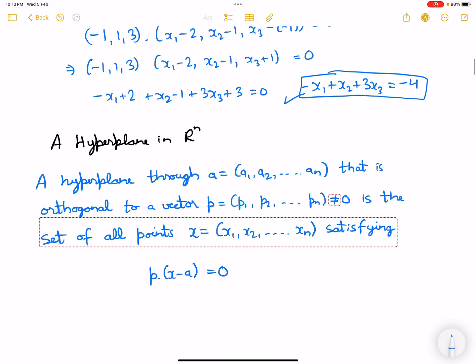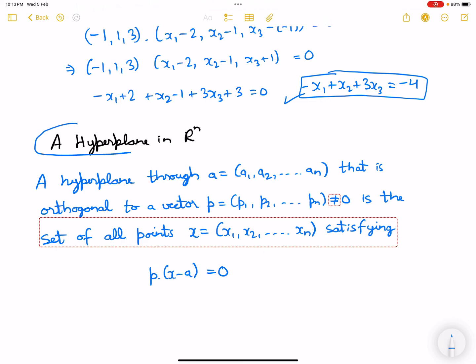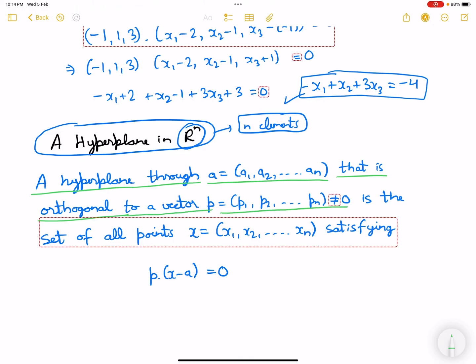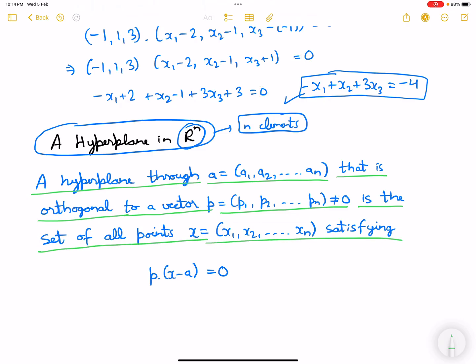Now the definition for a hyperplane in Rⁿ, which basically has n elements: A hyperplane through the vector a that is orthogonal or normal to a vector p which is not equal to zero is the set of all points x satisfying the same thing, just we have made sure that we are doing it for n elements.